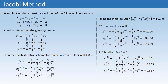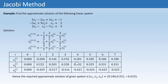We continue this process, and the approximate solutions up to the seventh iteration have been obtained. The value of X1 approaches 0.186, X2 approaches 0.331, and X3 approaches −0.423. Notably, the values in the sixth and seventh iterations are the same, so we stop and consider the seventh iteration result as our required approximate solution.